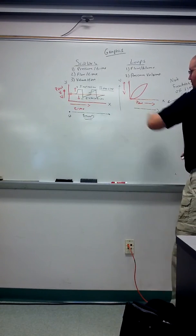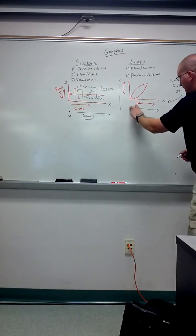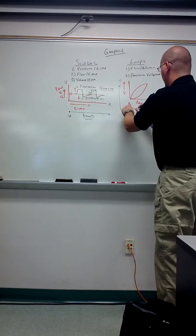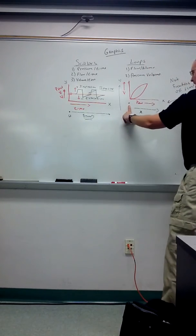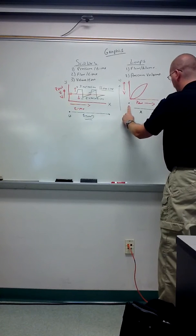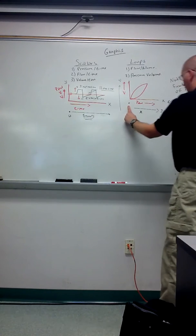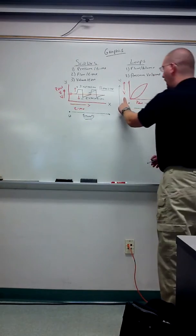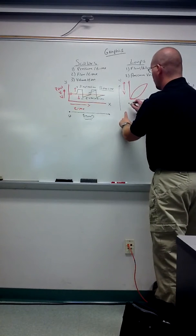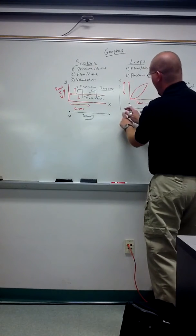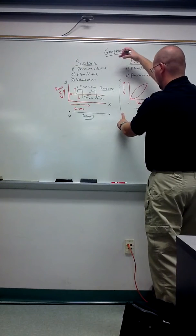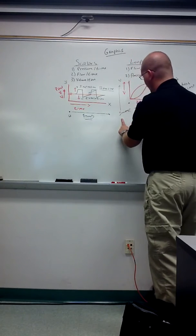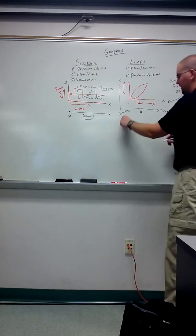So basically what a loop does is it tells me what kind of flow is associated with what kind of volume, or what kind of pressure is associated with what kind of volume. Here I have an example of a pressure-volume loop. On the X-axis here, I have PAW pressure. You can assume that this is zero here, and as the X-axis moves to the right, I'm going to have an increase in whatever I'm looking at. In this case, it's pressure. On the Y-axis, I have volume. This point here is zero, and as the Y-axis increases, I'm going to have an increase in volume.